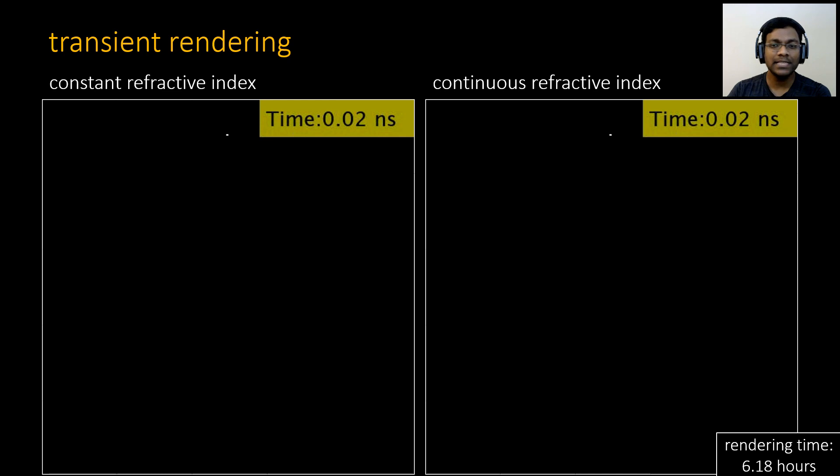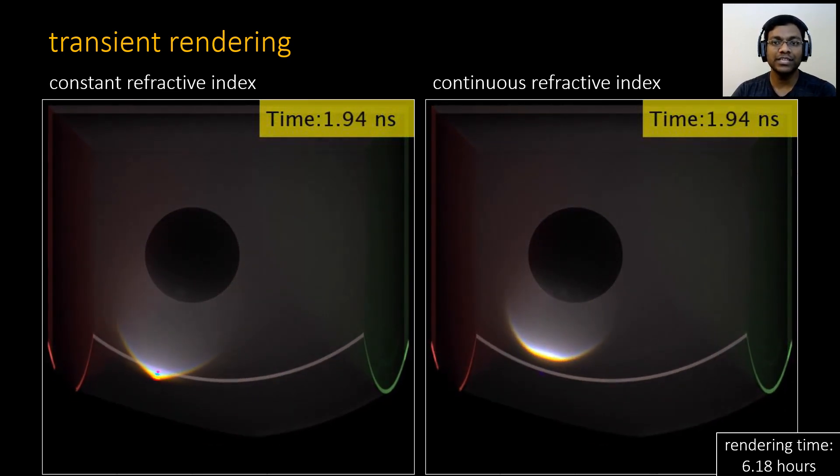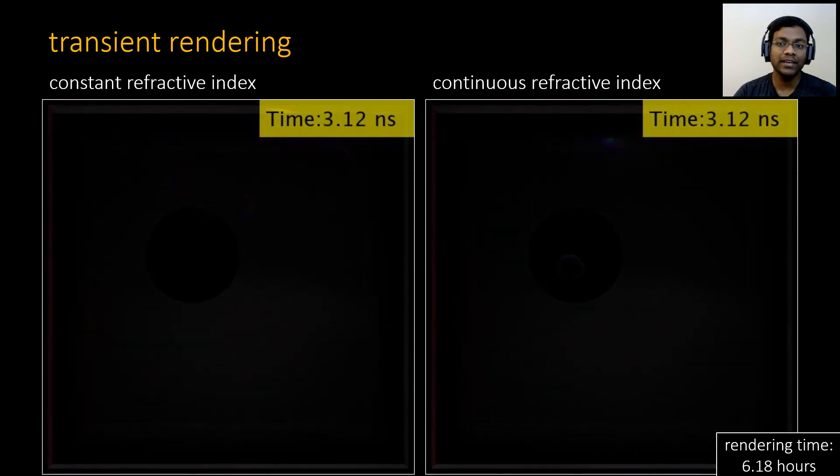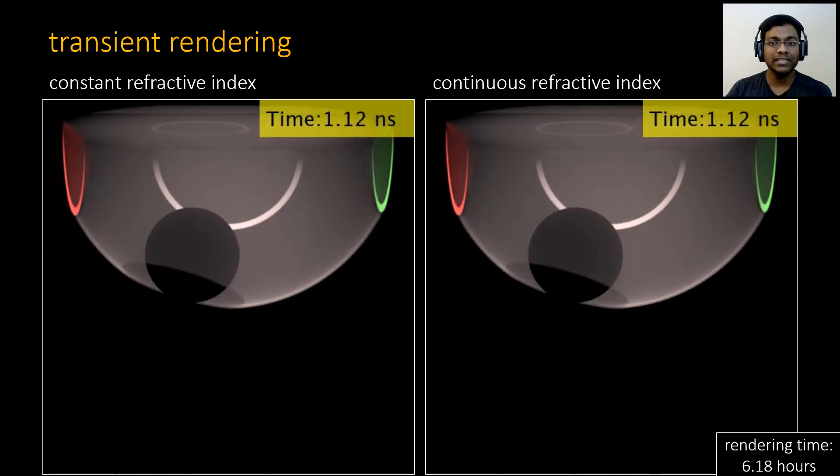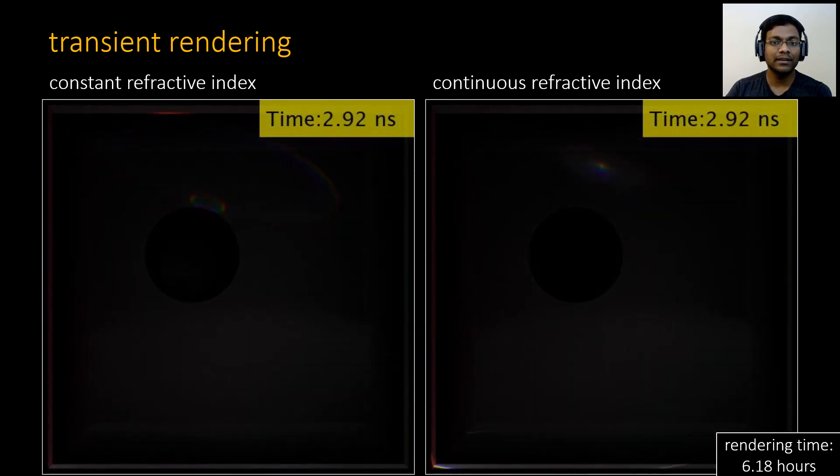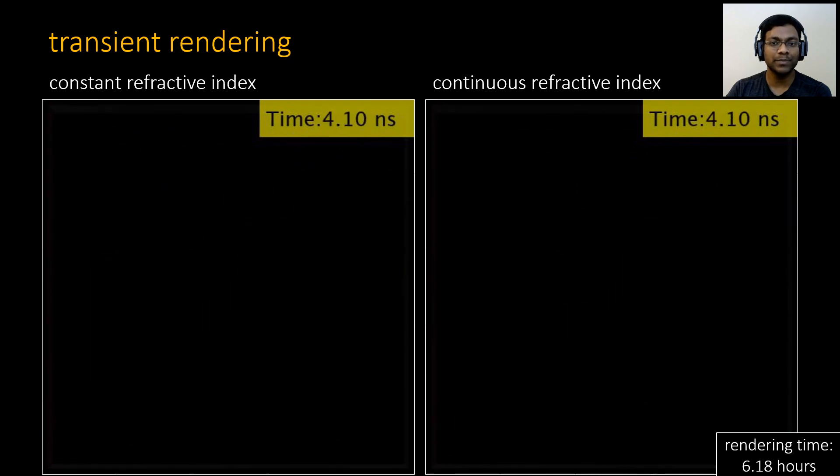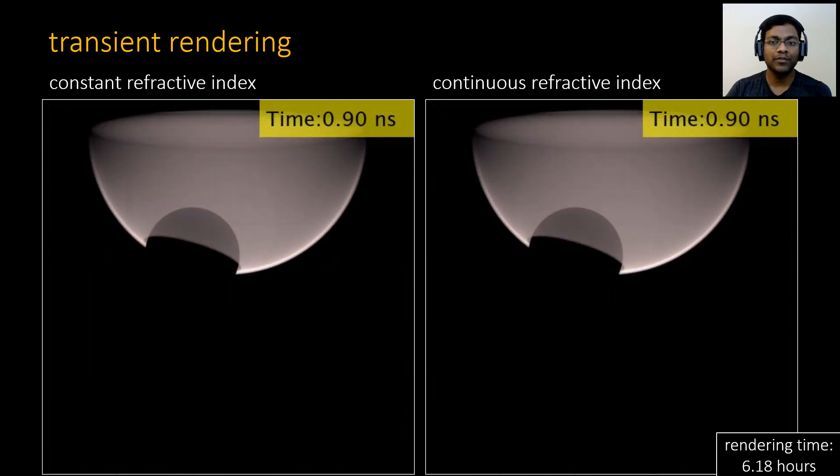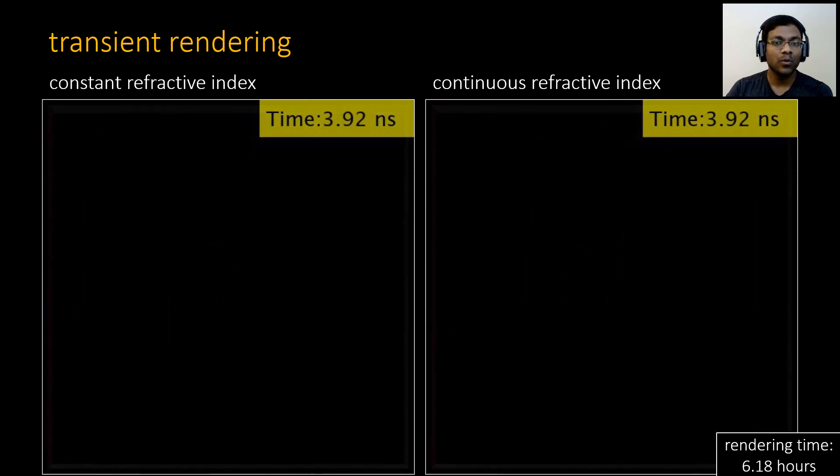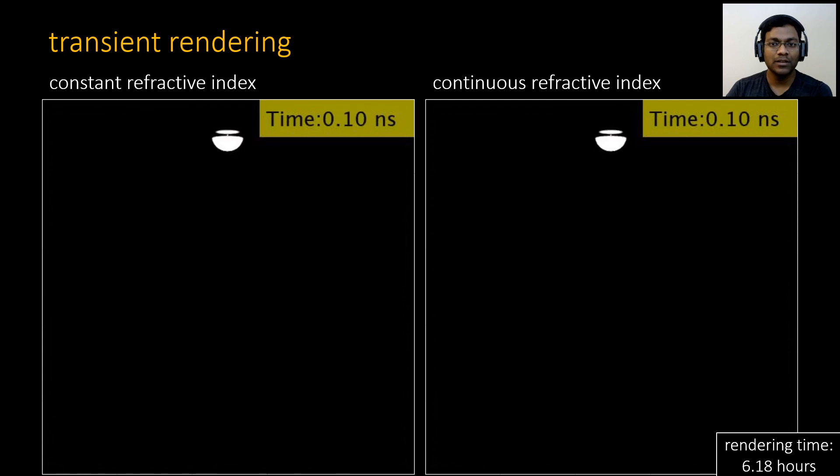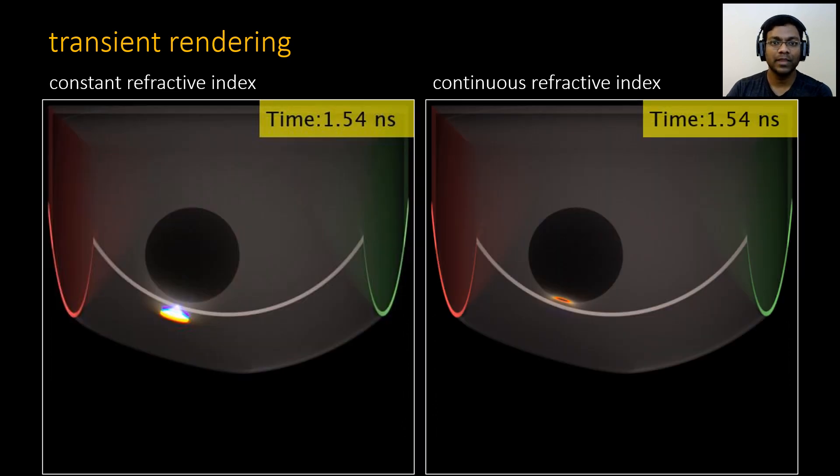Our path-based formulation can easily be extended to time-of-flight cameras. The time of travel here accounts for change in the speed of light due to varying refractive index. To better capture the dispersion, we rendered the travel time of 76 spectral channels and projected the hyperspectral transient rendering onto the RGB space. The spheres here are either made up of crown glass on the left or a linear combination of flint and crown glass on the right. Quite a lot of things are happening here. So, let us watch a couple of frames.